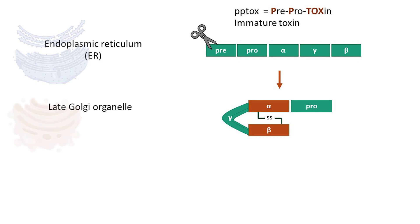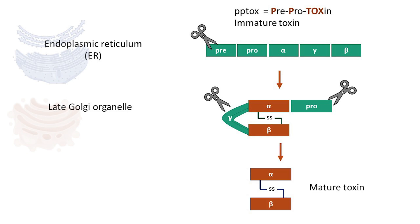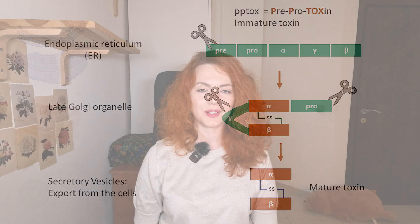Then, this form of toxin is translocated to the Golgi system, where the rest of the modifications happen, including cleavage of the pro-region and the intramolecular gamma sequence, leading to formation of the mature toxin, which is subsequently secreted by the killer yeast cell with the help of secretory vesicles.